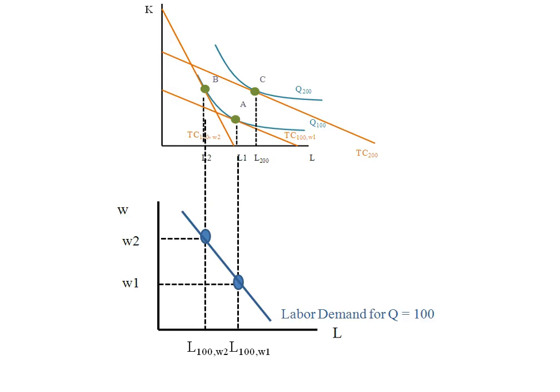I can go back to that graph that I was constructing and I can drop down that quantity of labor for 200 comma W1. Now this is going to correspond to a wage of W1 so I'm extending that line out. In this case I've got the labor demand for 200 units of output.